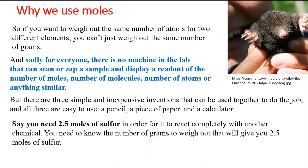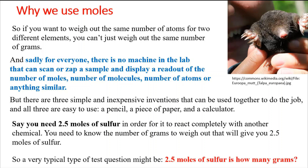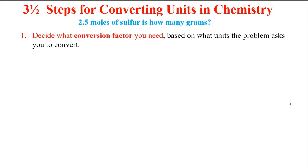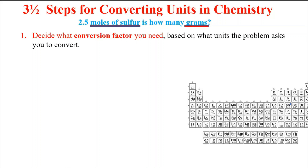Here's our first example: you need 2.5 moles of sulfur to react completely with another chemical — how many grams is that? There are three and a half steps for dimensional analysis problems like this. The first step is to decide what conversion factor you need based on the units the problem asks you to convert. The conversion factor is just the relationship between what you start with and what you want to end up with. For elements, this comes from the periodic table.